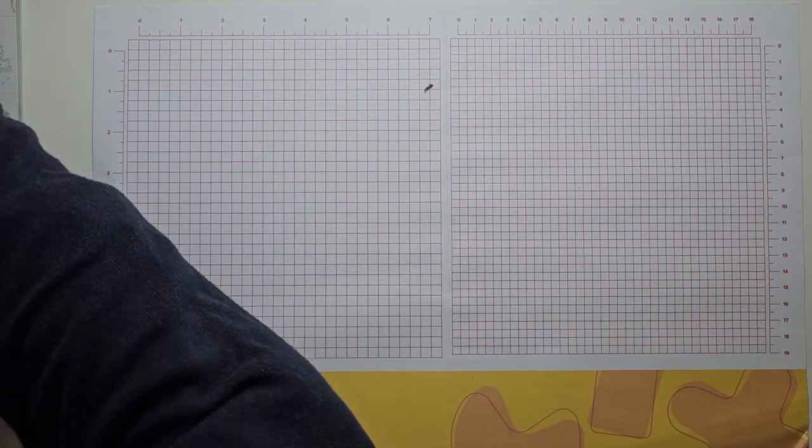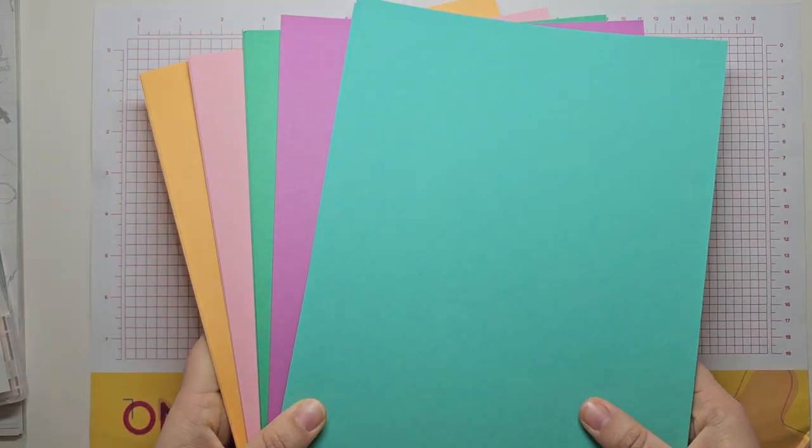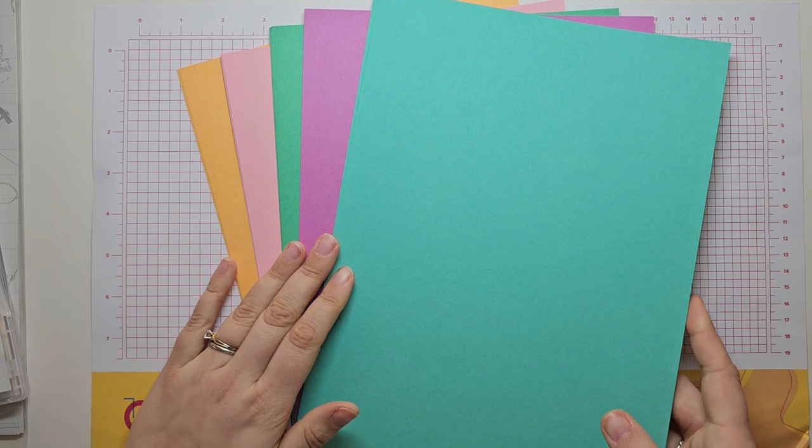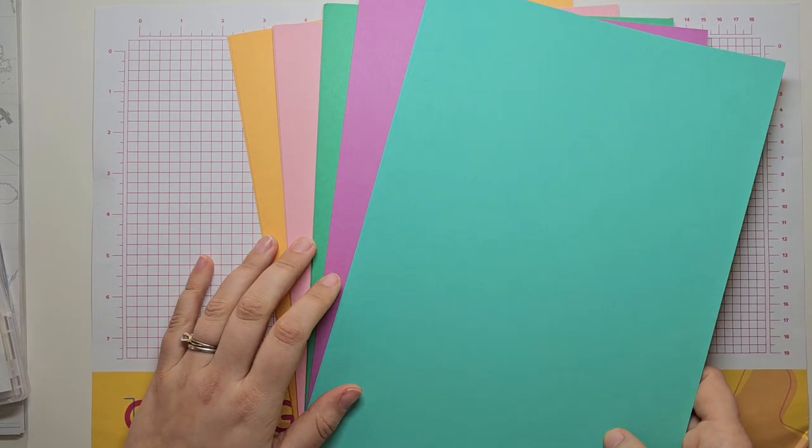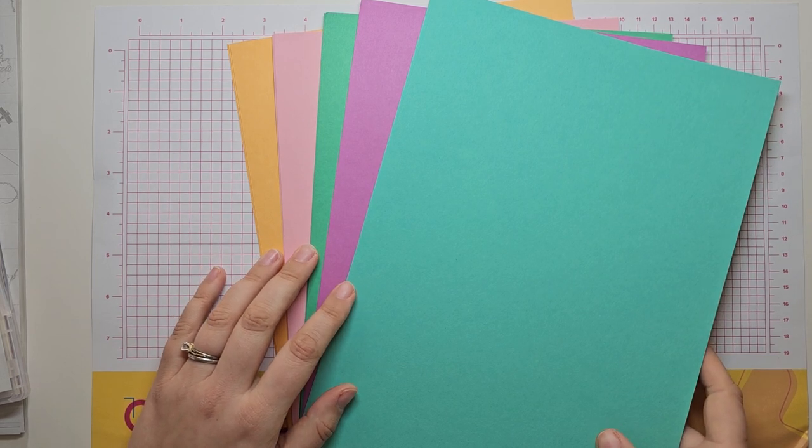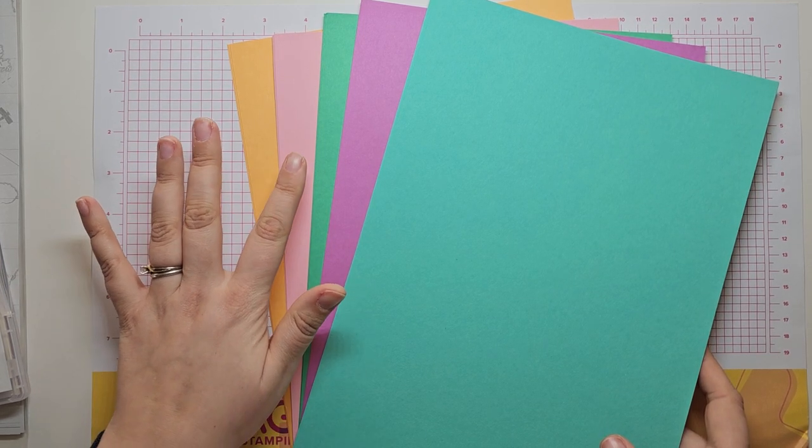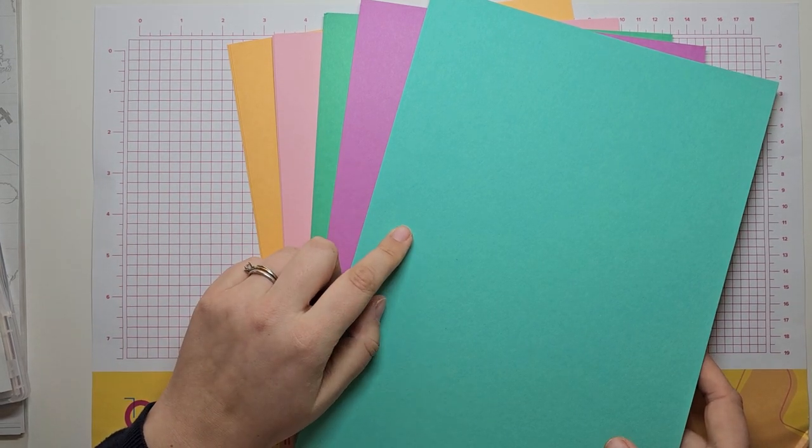I'm going to start with the items that I've got that focus on the new in colours. So you will have already seen these in a previous video of mine, but these are our new in colours for 2024 to 2026. We have got Peach Pie, Pretty in Pink, Shy Shamrock, Petunia Pop and Summer Splash.